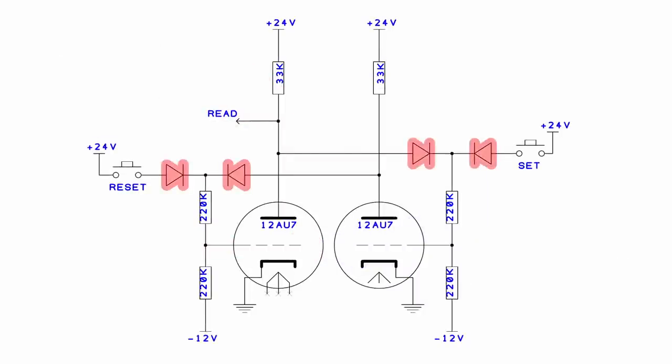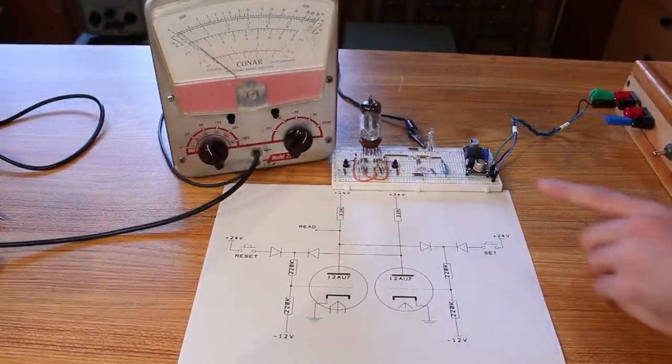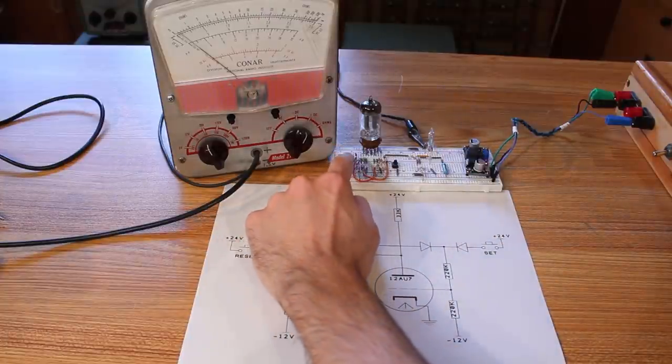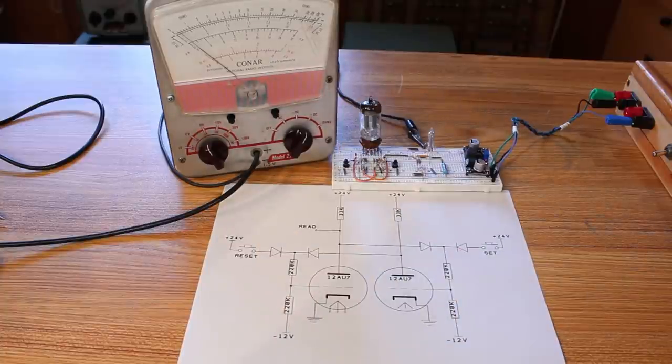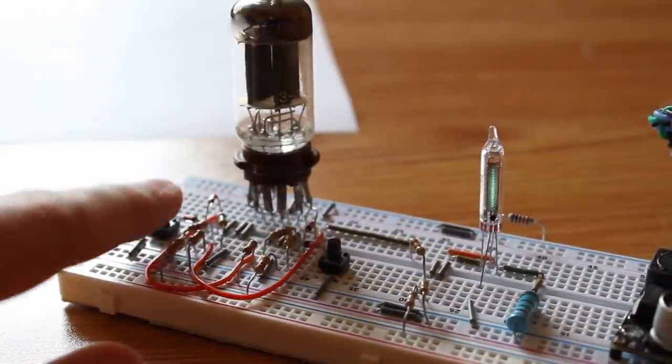Each triode has two diodes feeding into the grid through a 220,000 ohm voltage divider. One diode is connected to the plate of the other triode and the other diode is connected to either the set or reset switch. We have a 33,000 ohm plate resistor where we're going to take our read value from. That is exactly what we have on the breadboard. If we press the button, that is the set button which turned our VFD on. If I push the reset button, that turns the VFD off. There we go, we have ourselves an SR flip-flop in a single tube.